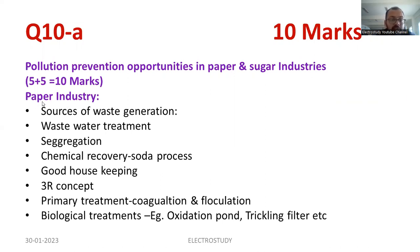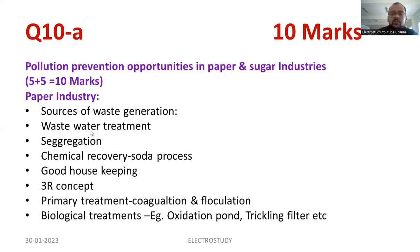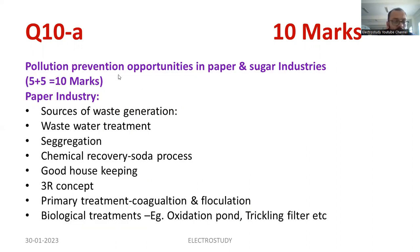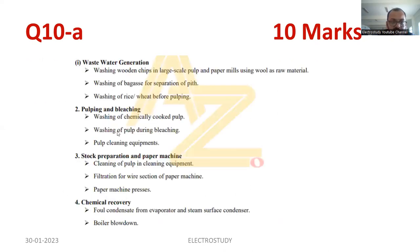Good housekeeping is also one of the essential things to minimize waste as much as possible. Then the 3R concept — reduce, reuse, recycle. Then primary treatment such as coagulation and flocculation. Then biological treatments like oxidation pond and trickling filter — all these things you have to explain briefly regarding the paper industry. I request everyone to highlight these points in your answer book — that is mandatory — and try to underline these points. Regarding wastewater generation: the reason for wastewater generation, pulping and bleaching process, stock preparation, and different types of sources of wastewater generation — these are the different sources, and this you can also add in your answer book.